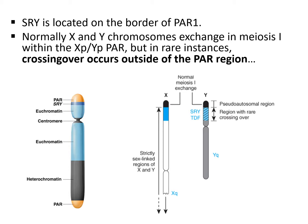SRY is located near the pseudoautosomal region of Y. Normally, X and Y chromosomes exchange in meiosis I within their special regions. But in rare cases, crossing over may exceed the normal region and may also involve the pseudoautosomal region. In this picture, the black-shaded sections are pseudoautosomal regions, and in blue we see the regions of rare crossing over. What happens if crossing over involves the SRY-TDF region as well?